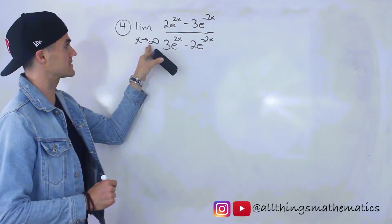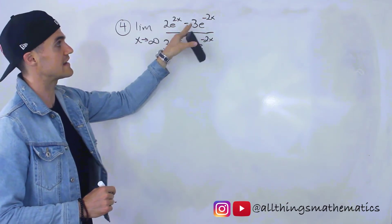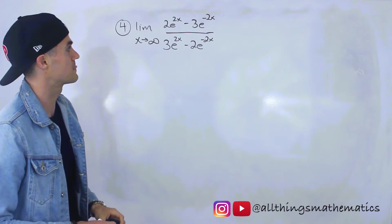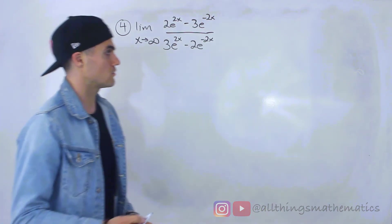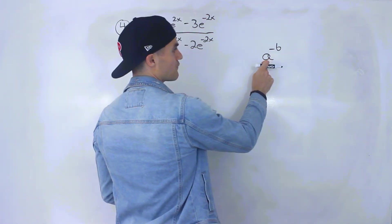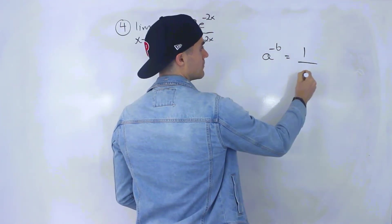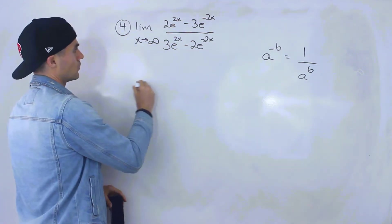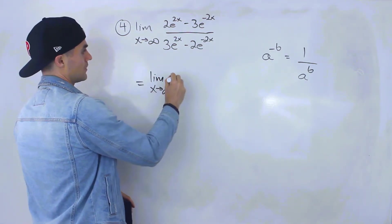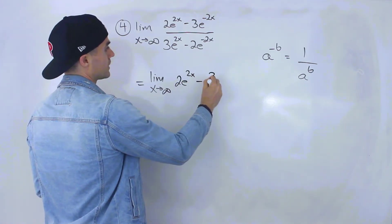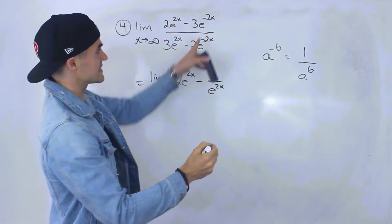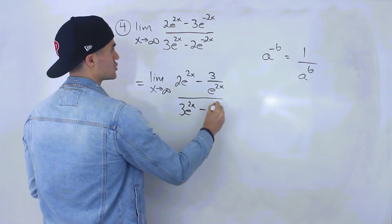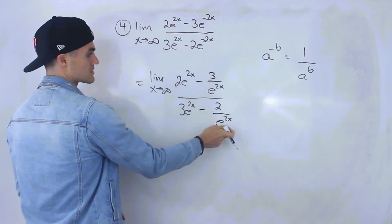Finally, number four: the limit as x approaches infinity of (2e^x minus 3e^(negative 2x)) all over (3e^(2x) minus 2e^(negative 2x)). We have negative exponents to deal with. Using exponent laws, a base to a negative exponent equals the same base to a positive exponent brought to the denominator. So we rewrite this as (2e^x minus 3 over e^(2x)) all over (3e^(2x) minus 2 over e^(2x)).